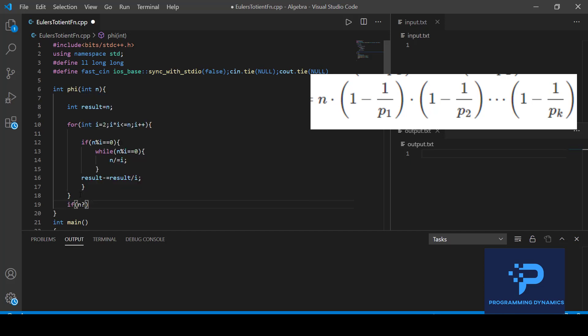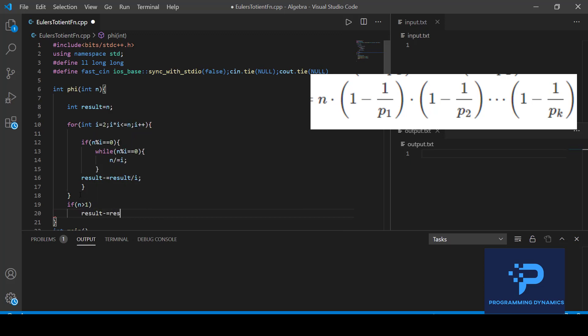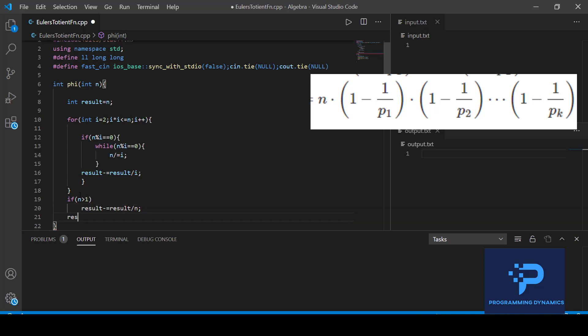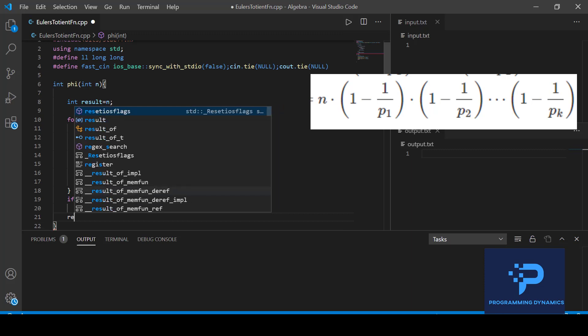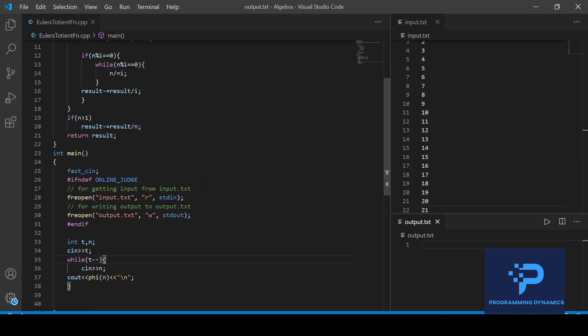So one more thing that we have to cover this final edge case is that if n still remains greater than 1 then result minus equal to result by n and in the end we will return result. So now that I have coded the Euler's totient function let's test it for few test cases like I had shown initially in the screen.